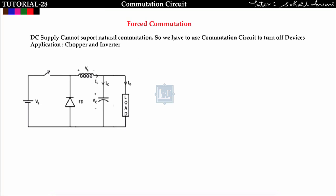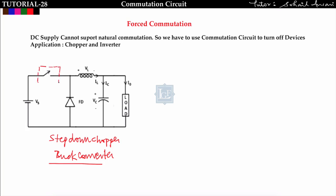Now the second part is forced commutation. Consider this step-down chopper — also called a buck converter — which is a DC-to-DC converter converting fixed DC into variable DC. Here I am connecting an SCR as a switch. To turn on the SCR we give gate current, but to turn off it, either we reverse the supply voltage or make the anode current less than the latching current. However, in a DC-to-DC converter the supply voltage is DC and cannot be reversed.